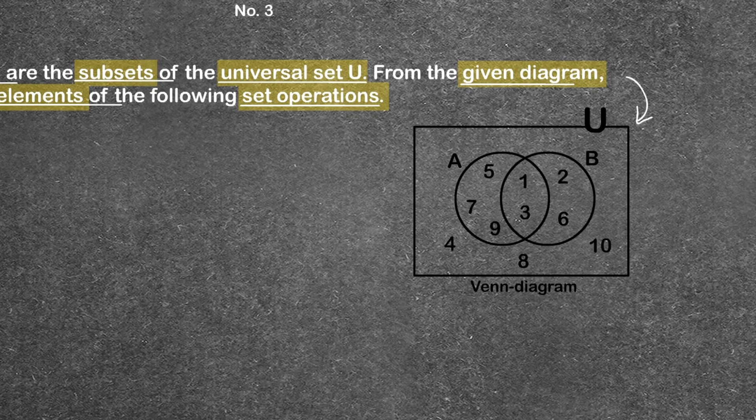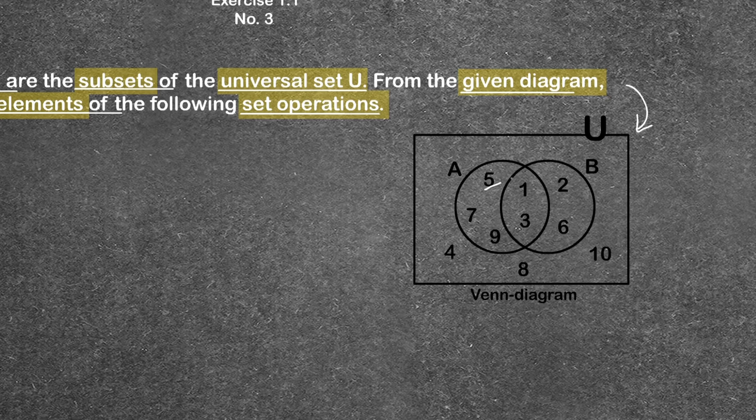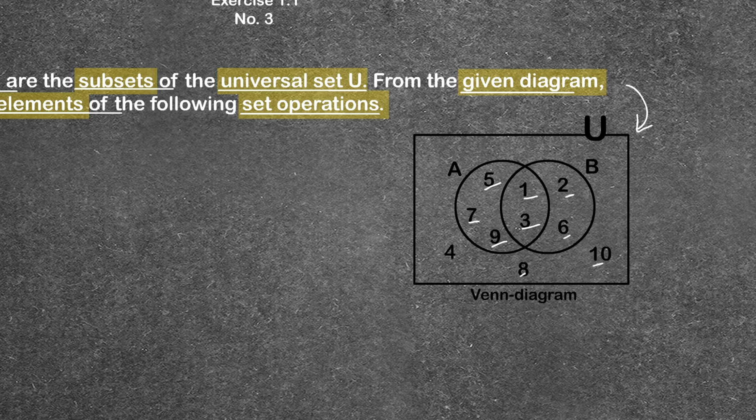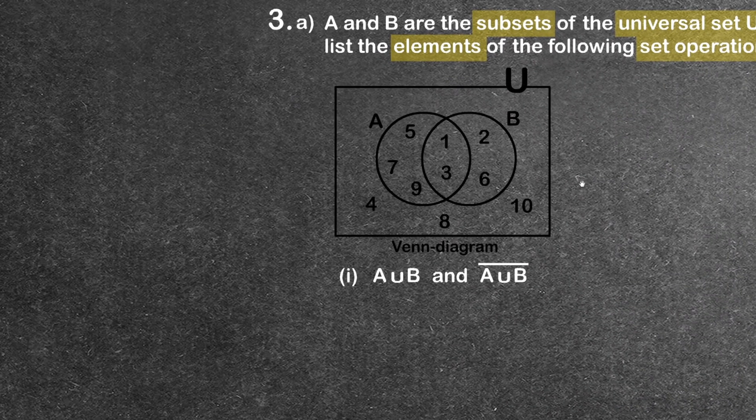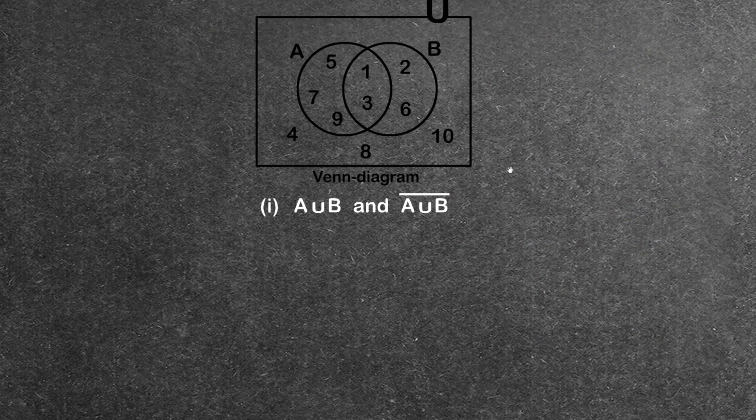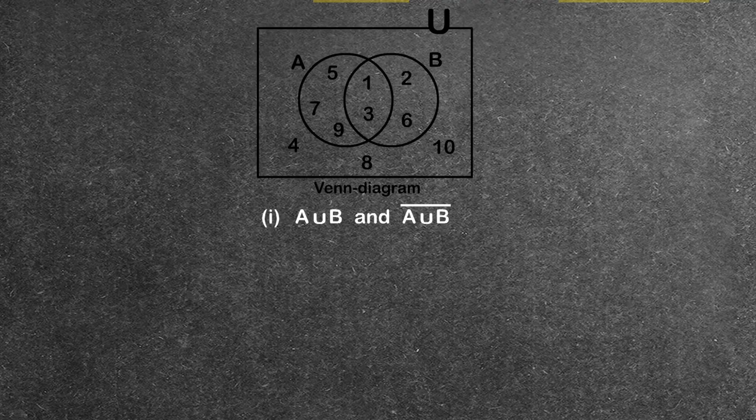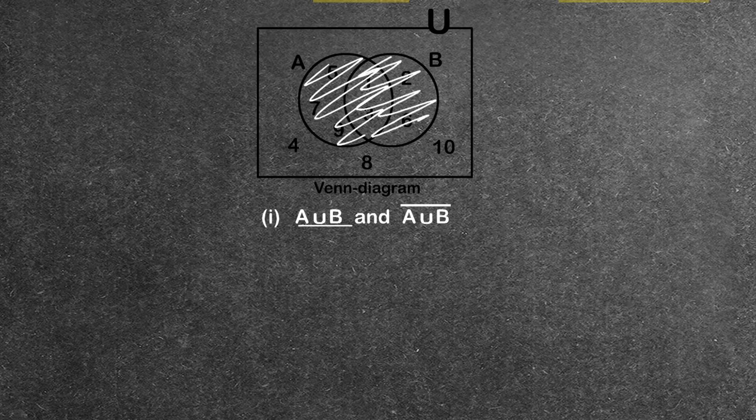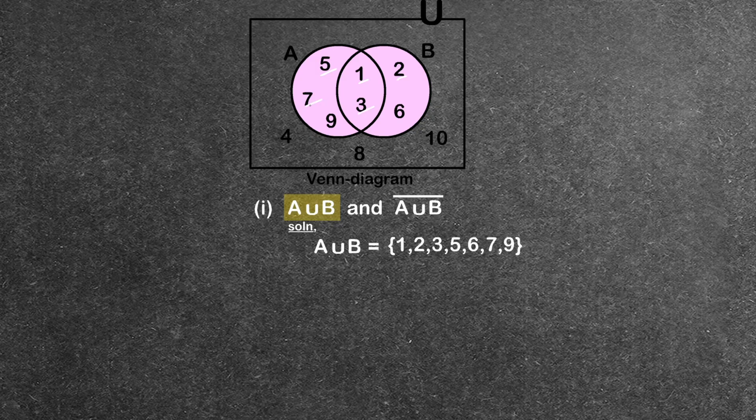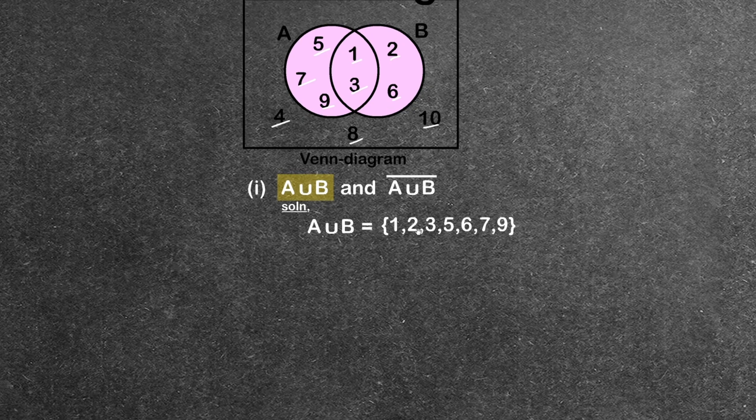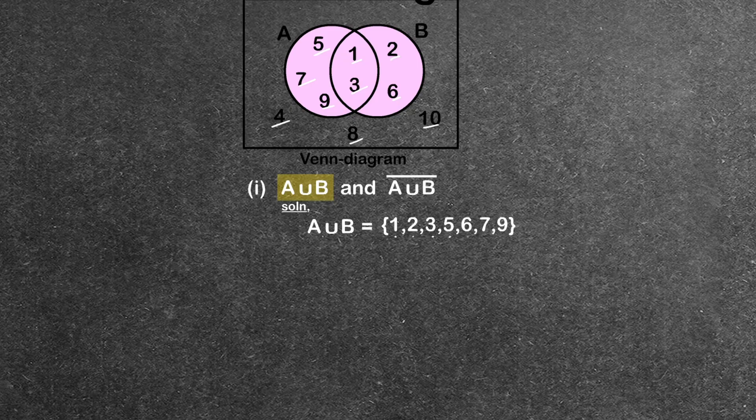First, we identify the elements: 5, 1, 2, 3, 6. Now for part (i), A∪B (A union B). A union B means all elements in A and all elements in B combined. So we have 5, 1, 2, 3, 6, 7, 9. Arranging in order: 1, 2, 3, 5, 6, 7, 9.